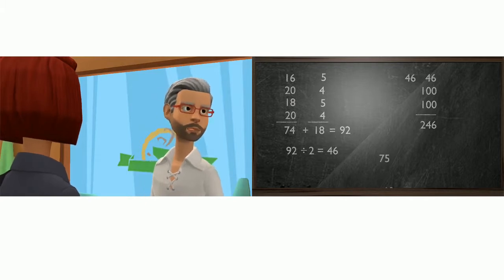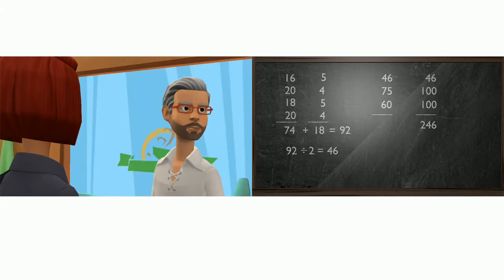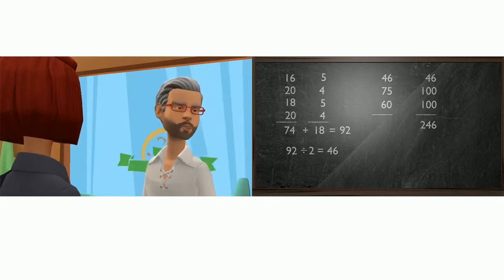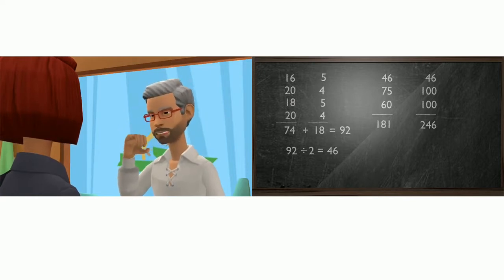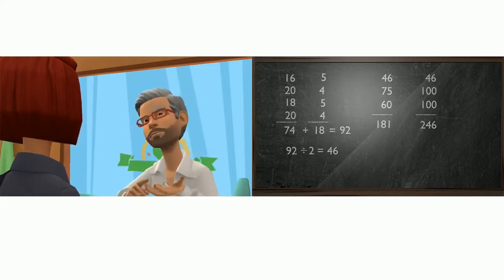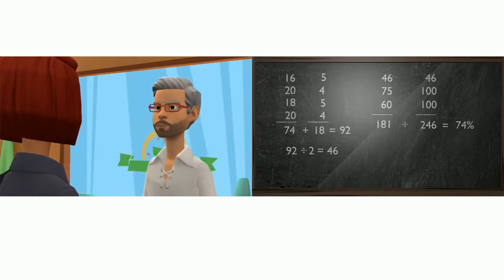Now you got 46 points on the assignments, 75 on the midterm, and let's say 60 on the final. That gives you 181 points. So 181 out of 246 gives you a 74%.